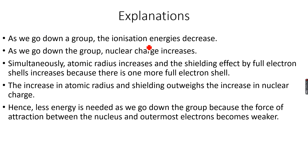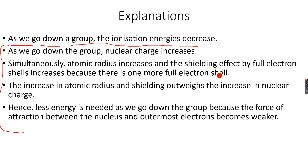The net effect is a fall in the first ionization energy. As we go down the group, nuclear charge increases, but atomic radius increases and the shielding effect by full electron shells increases because there is one more full electron shell every time we go down. The increase in atomic radius and shielding outweighs the increase in nuclear charge. Hence, less energy is needed to remove an electron from the outermost shell because the force of attraction between the nucleus and outermost electrons becomes weaker.